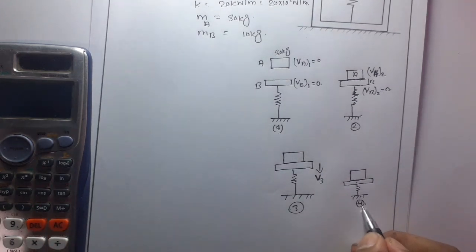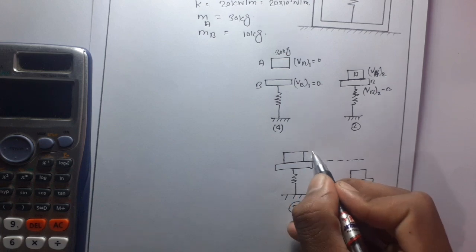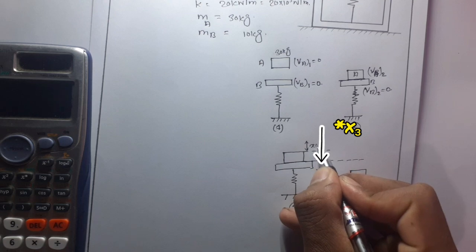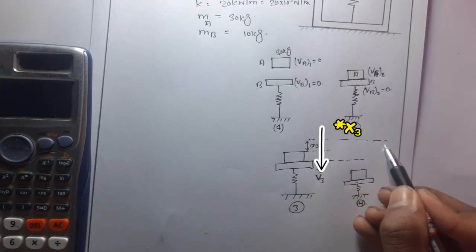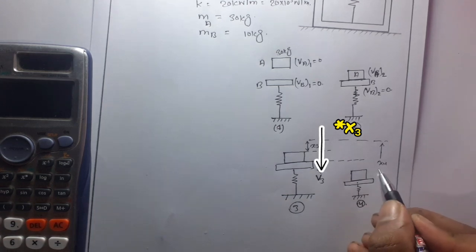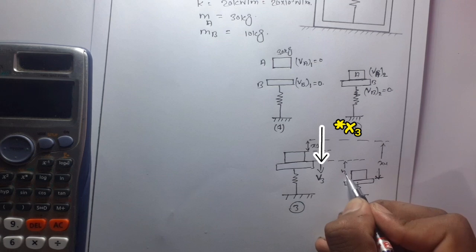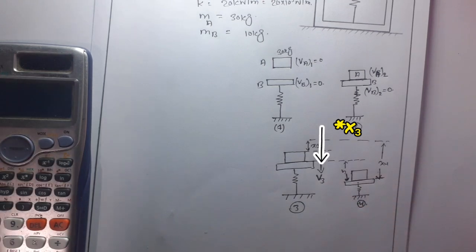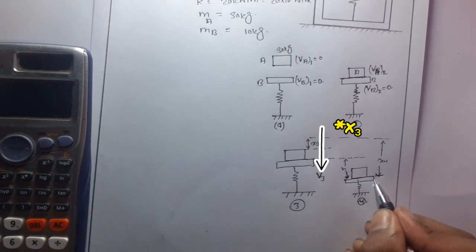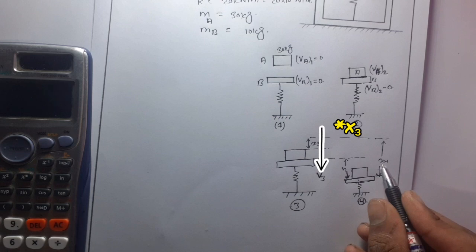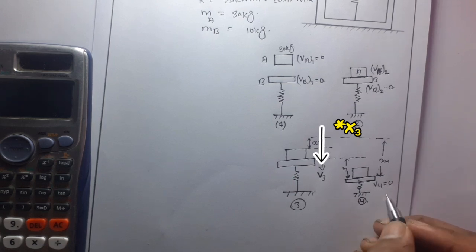Position four is the final position — the maximum deflection point. The distance x3 is the initial deflection of the spring, and x4 is the total deflection from the natural length. The height h is the difference from x3 to x4. After maximum deflection, that is at x4, the velocity of the block is zero.